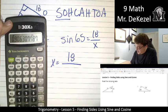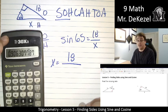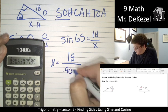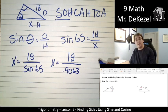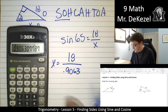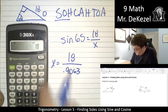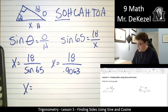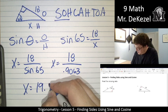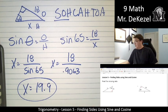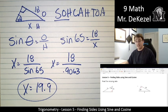x is equal to 18. Let's find out what sine of 65 is. 65 sine. Again, yours might be different when doing that. I'll try it again. 65 sine. Yeah. 0.9063, which means that x is equal to 18 divided by 0.9063. 19.9. That's what we'll go with. And we're looking for our hypotenuse. It should be the longest side. That does make sense.